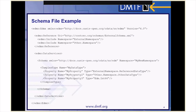In this schema file example, it opens and closes with the EDMX tag. It also includes a reference to an external schema file called externalschema.xml from the Contoso website. Within that file, it is referencing two namespaces: external namespace and other dot namespace. The namespace definitions are found between the data services tags. The schema tags define the namespace MyNewNamespace, and since there is only one set of schema tags, only one namespace is defined.